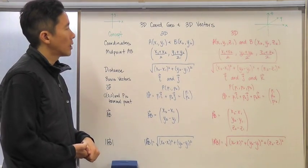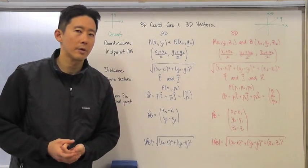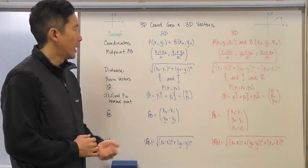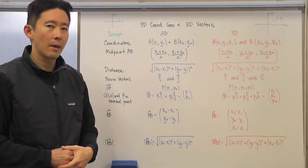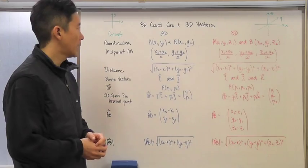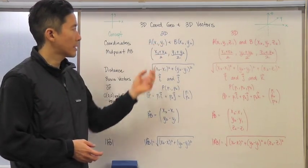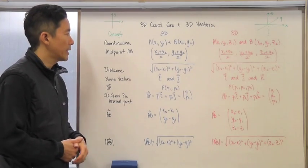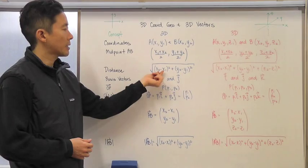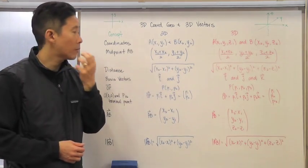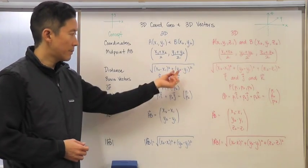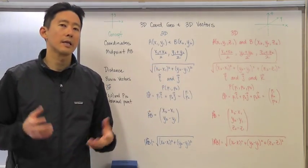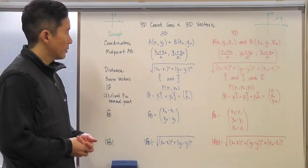We can talk about two coordinates. Coordinate A is going to be (x₁, y₁) and B is going to be (x₂, y₂). To find the midpoint you just take the average of both the x values and the y values. To find the distance, you take the difference between the x coordinates, square it, add the same thing done to the y values, and take the square root — that's basically the Pythagorean theorem.